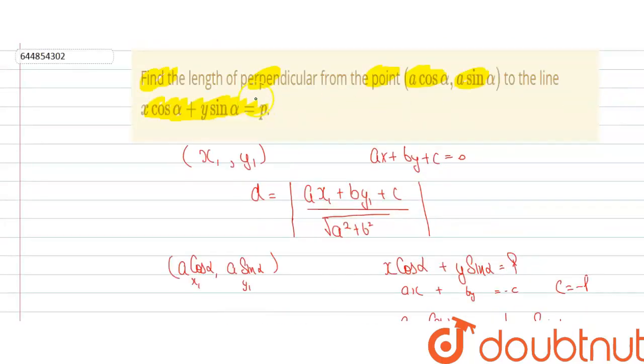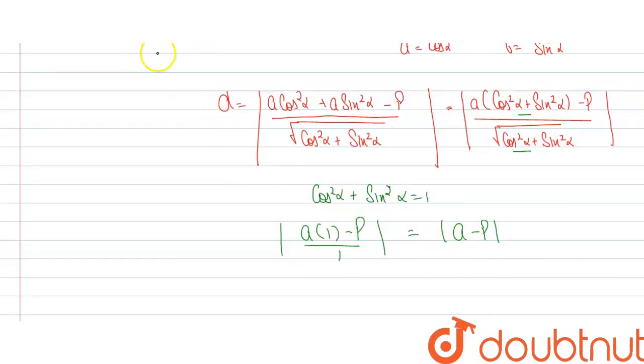So as in this question we need to find the length of perpendicular from this point to the line. So length of perpendicular will be mod A minus P, which is our answer. Thank you so much.